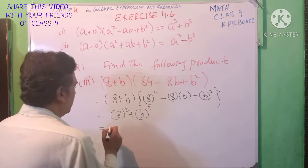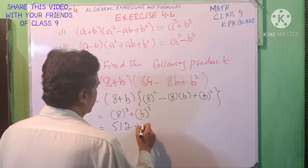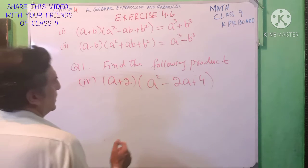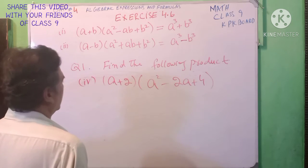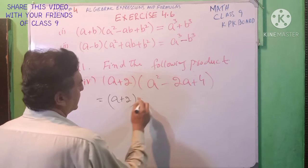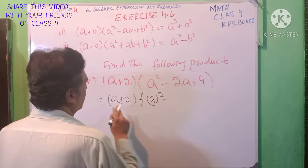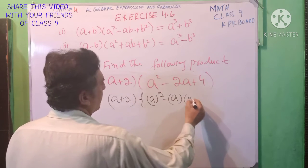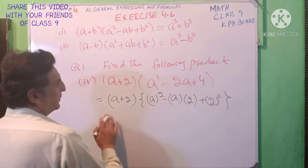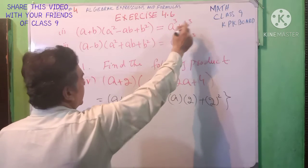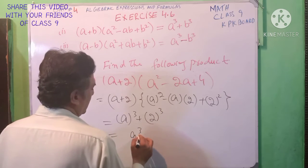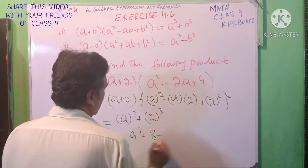a cube is equal to 512 plus b cube. Part 4 is: (a+2)(a²-2a+4). a plus 2, a square minus ab plus b square — 2 square. یہ تمام expression فارمولہ میں convert ہو گیا: a cube plus b cube. a cube plus b cube. b is 2, so 2 cube equals 8.